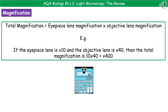When working out the magnification, what we need to do is look at the eyepiece lens magnification and the objective lens magnification and simply multiply those together. So for example, if our eyepiece lens was ×10 and our objective lens was ×40, then 40 times 10 gives us a total magnification of ×400.